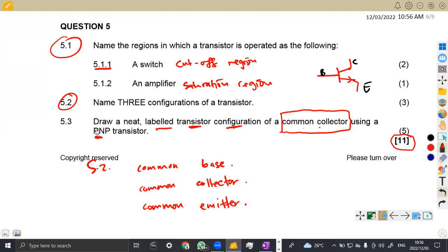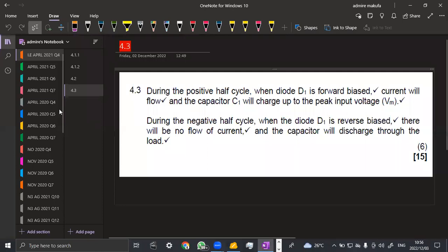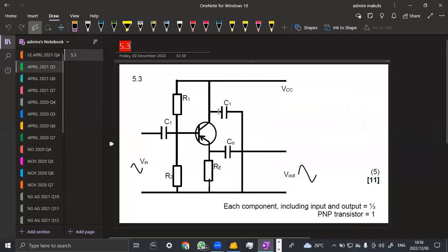Then using a PNP transistor. So this one, you're supposed to have a PNP transistor. Take note the transistor that you are using there. That is the most important part. Failure to do that, then you can lose marks for drawing a wrong transistor. So without wasting much time, I'm just going to show you the diagram, how it looks like.